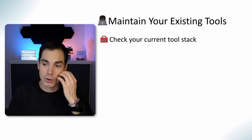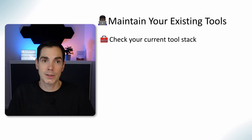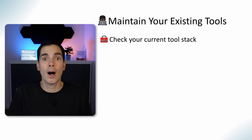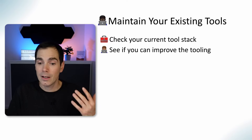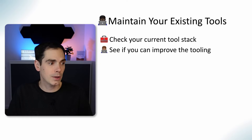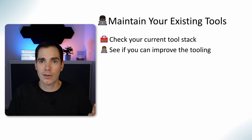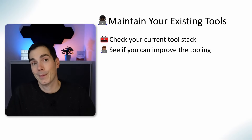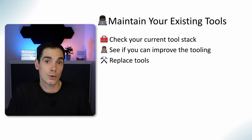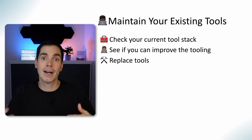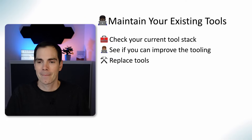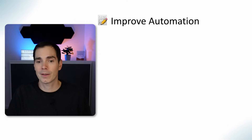Maintaining your existing tools is also something you can do. Check your current tool stack — are there tools you don't use anymore or aren't happy with? Investigate and learn about other tools to see how they can benefit you. Improve the tooling where needed. If you left a note like 'this automation script needs to be refactored,' now is the perfect time. Replacing tools is also important if you find a better alternative.